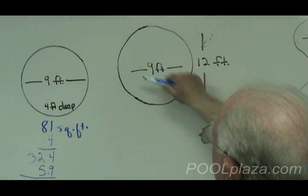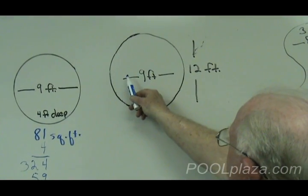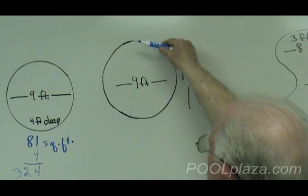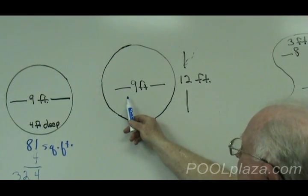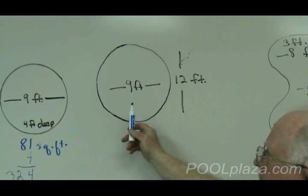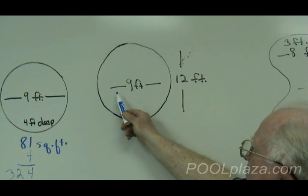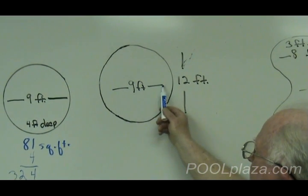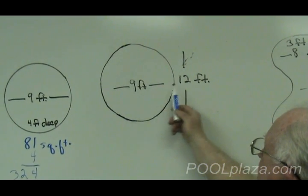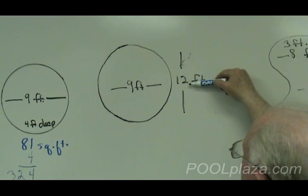An oval pool, which is narrow and longer, is computed in the same way as a round pool, except you multiply the width, 9 feet, times the length, 12 feet.